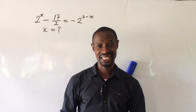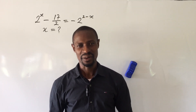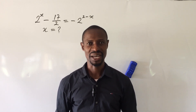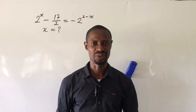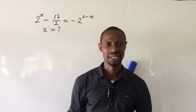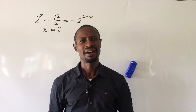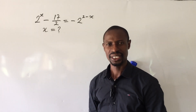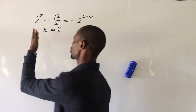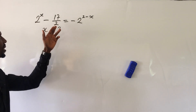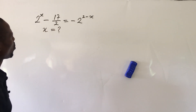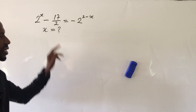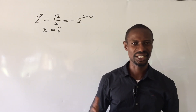Welcome to Online Mass TV. I'm sorry I wasn't able to upload a video for the past few days due to some issues with my laptop. Today we have a challenge on exponential equations. The question is: 2 to the power of x, minus 17 over 2, equals negative 2 to the power of 2 minus x. What will be the value of x?